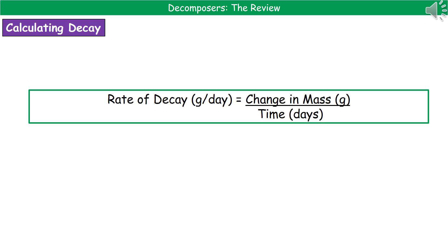The last thing we need to be able to do is calculate the rate of decay. The units for rate of decay are grams per day, and the formula is the change in mass divided by the time. If given results showing mass on day zero and mass on different days, calculate the difference between those two days — that's the change in mass — and divide by the time period that has elapsed.